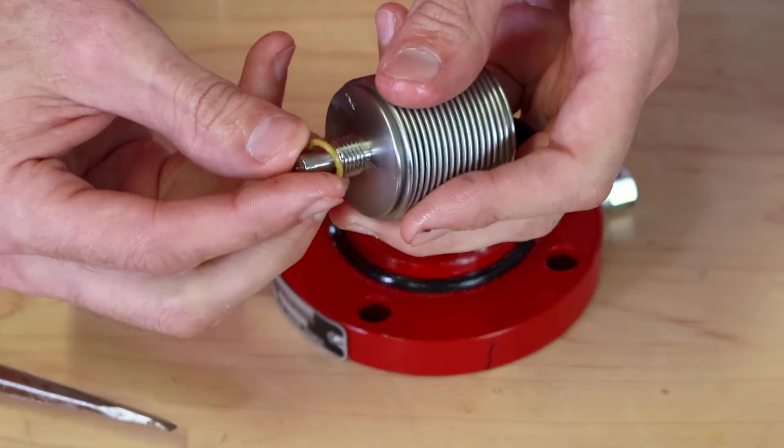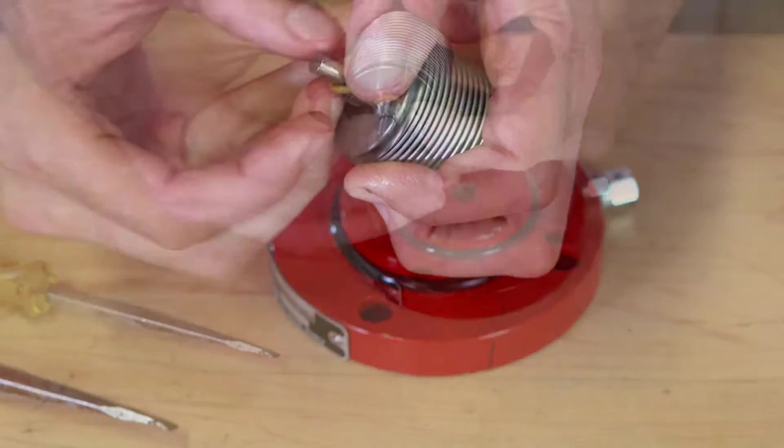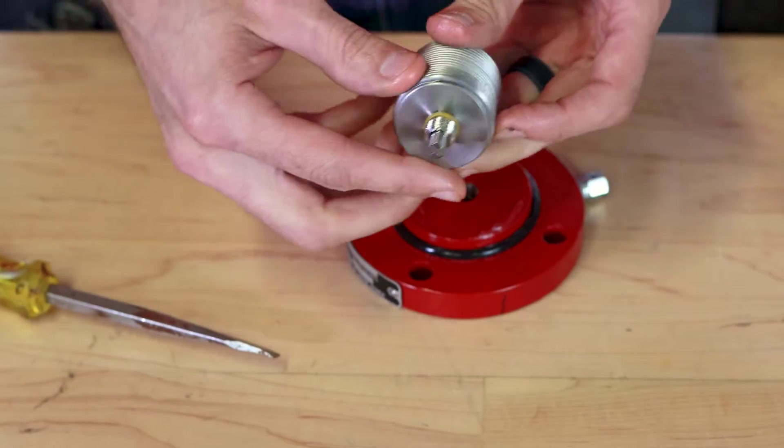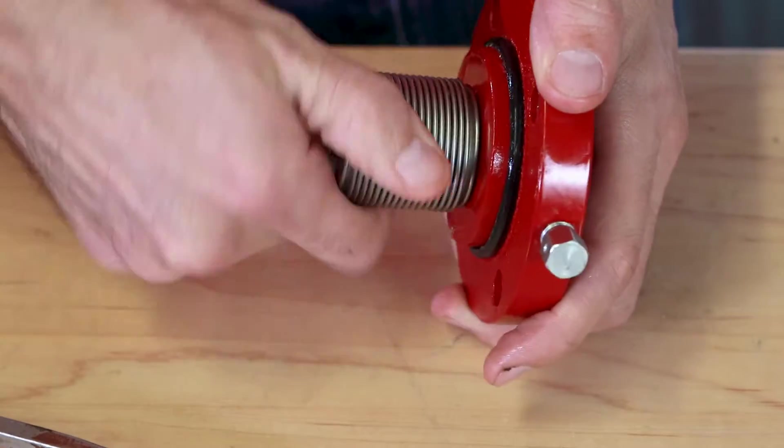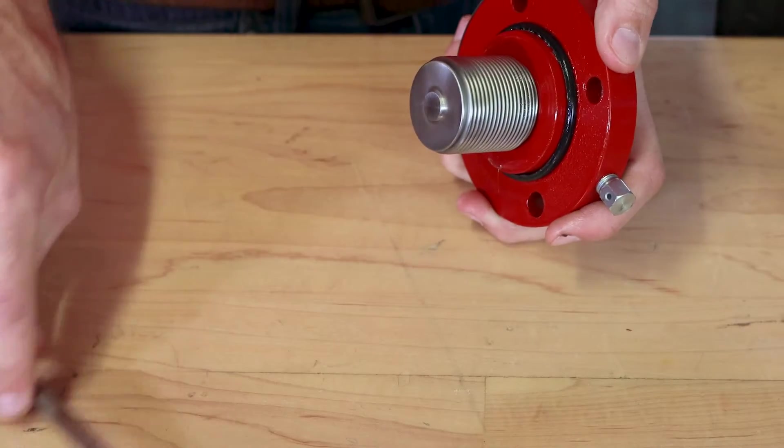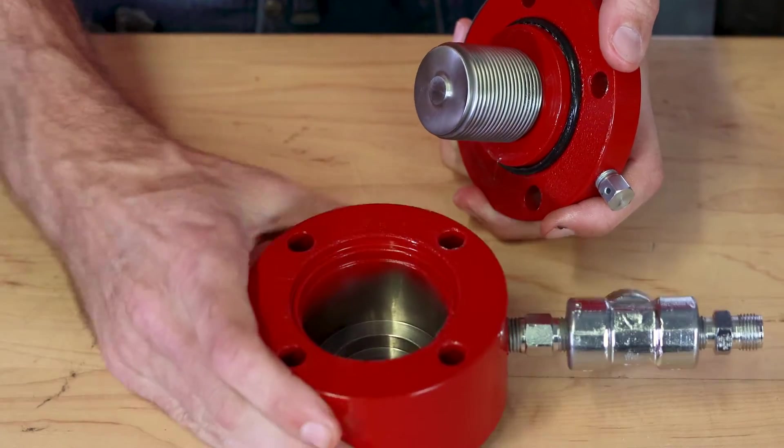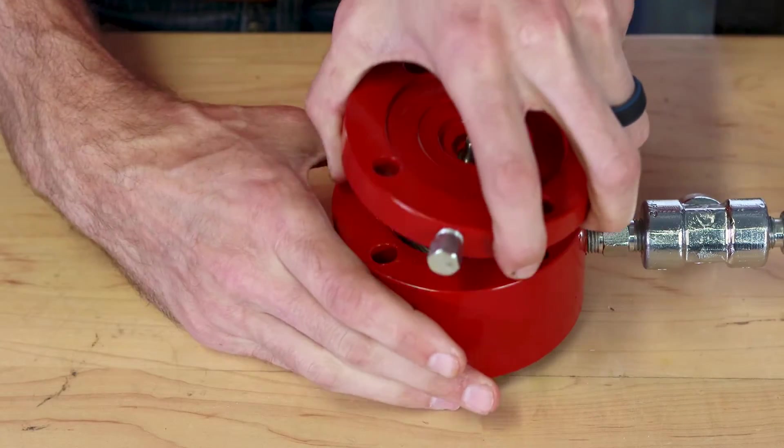Roll the o-ring over the threads and install it on the new bellows assembly. Thread the new bellows into the lower housing by hand. Then reinstall the housing on the main body pushing down with your hand and make sure to align the markings.